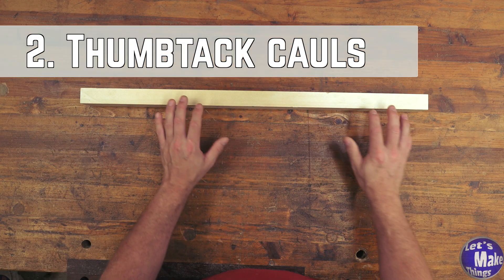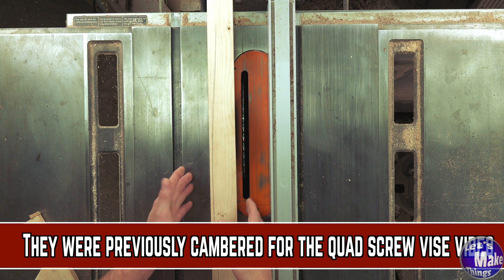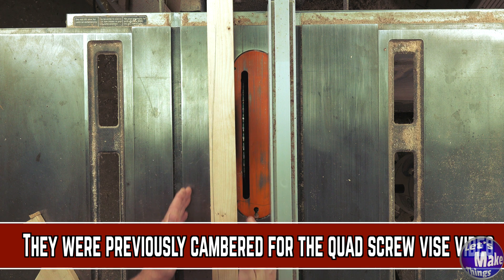Instead, we'll go over to the table saw. The first thing that I'm going to do is take my cambered caul, and I'm going to go ahead and make both sides parallel again.